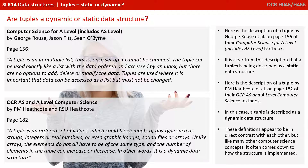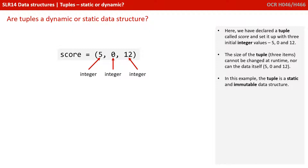Now these two definitions, both by very respected authors, appear to be in direct contrast with each other. But like many other computer science concepts, it often comes down to how the structure is actually implemented. In this first example, we've declared a tuple called score and set it up with three initial integer values: 5, 0, and 12. The size of the tuple cannot be changed at runtime, nor can the data it contains. In this example, the tuple is a static and immutable data structure.